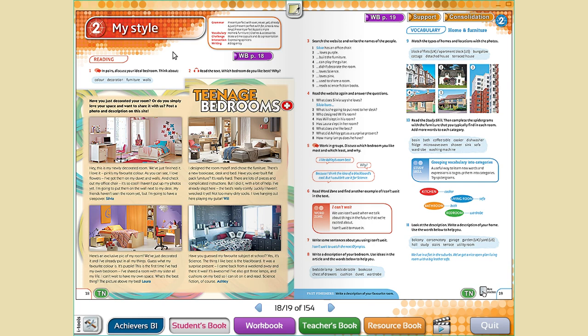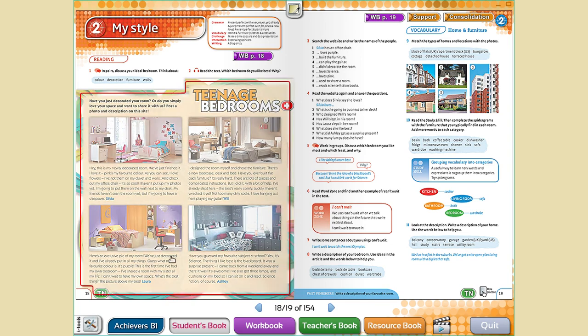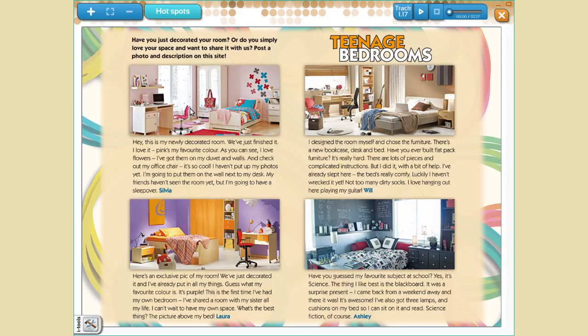Now, the same questions were done to some teenagers and they answered all these questions in this text comprehension. I want you to read the description of Sylvia's room, Will's, Laura's, and Ashley's. You are going to read all these text comprehensions. Remember that it is really important to underline the new words. If you need, you can check the meaning in the dictionary.